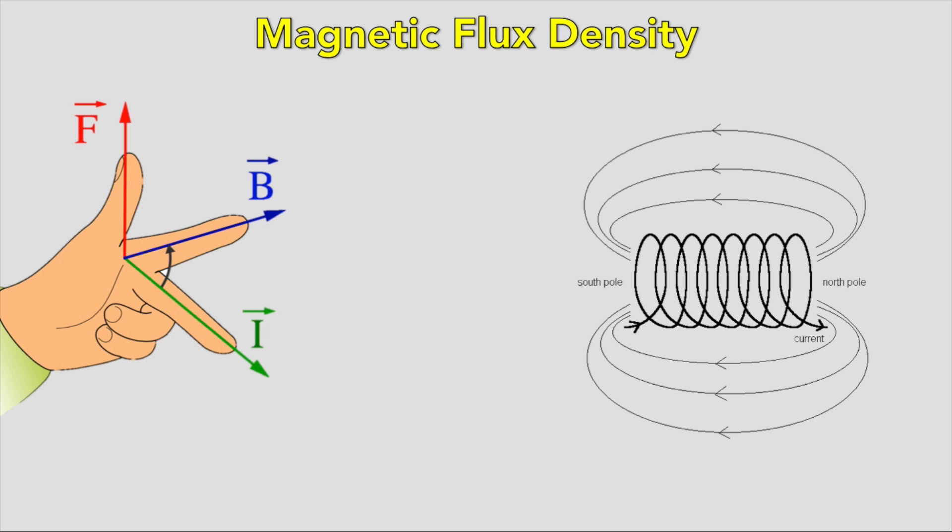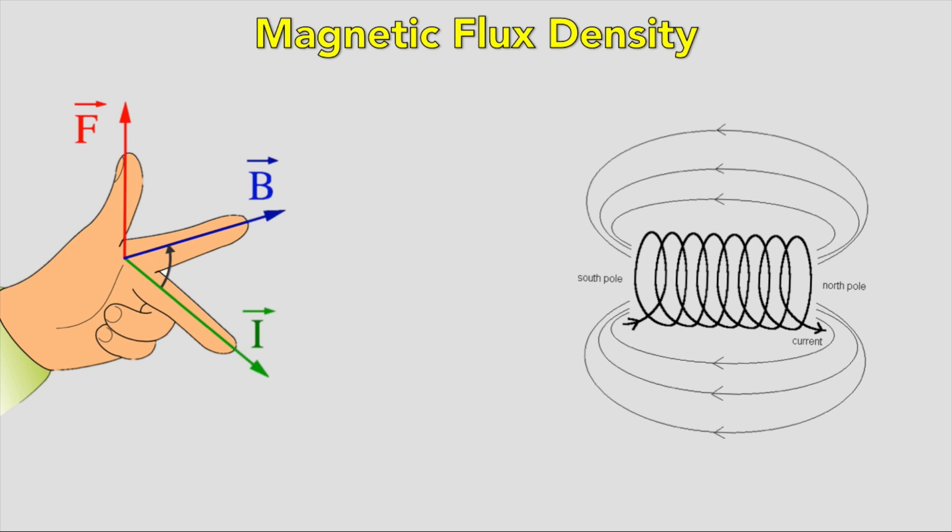If you use your right hand it won't work unless you can bend your thumb backwards. Your thumb represents the force, your index finger is the magnetic field, and your middle finger is the current. If you use AC, then the wire will vibrate due to the reversing current.